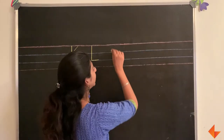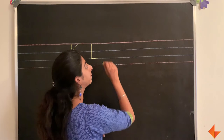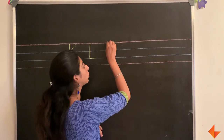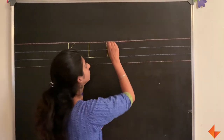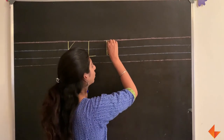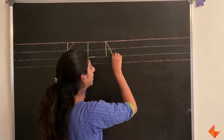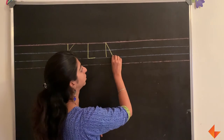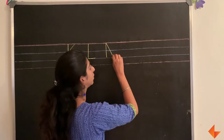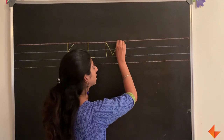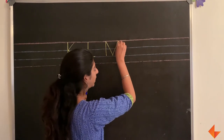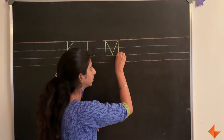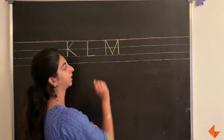To write the letter M, draw a standing line, draw a slanting line till the bottom, draw another slanting line, and a standing line.